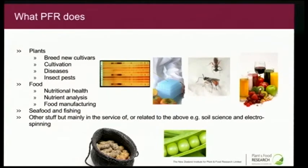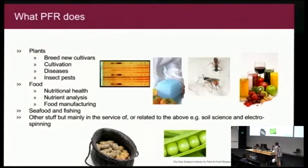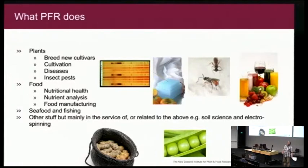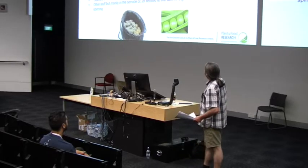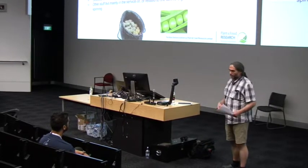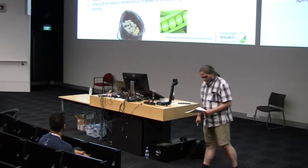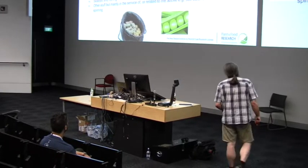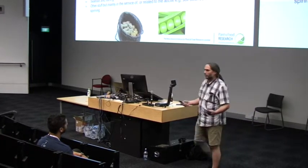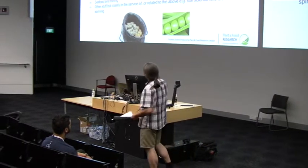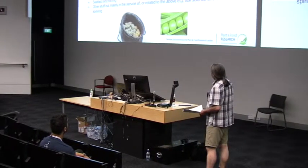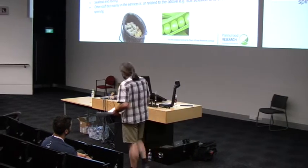We do research on plants and food — fairly obvious. We do breeding for things like kiwifruit, apples, peas, potatoes, and strawberries, and we make money from creating new cultivars. We also help farmers farm their crops more efficiently, try to find cures for diseases and insect problems, and do research with food — nutritional health, things like gut health. If you eat a kiwifruit, how does it improve your gut health? We do nutrient analysis and also help food manufacturers do their thing better.